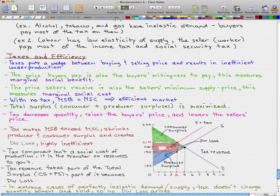This is our tax revenue. So that is our tax revenue, and the tax revenue takes a part of the total surplus, the consumer surplus and the producer surplus, and a part of it also becomes the deadweight loss.